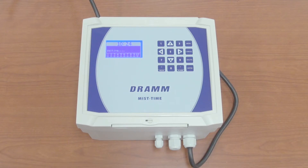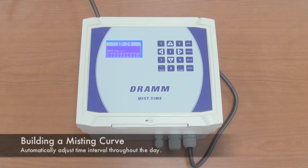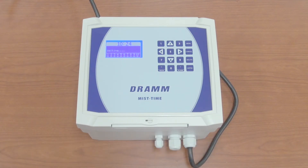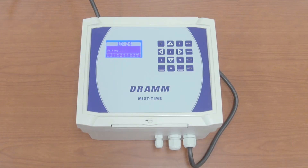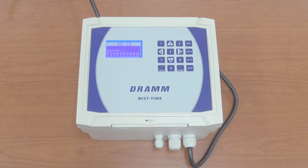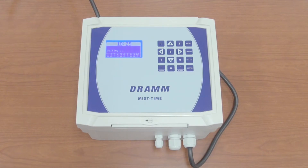An advanced feature of the mist time is the ability to use multiple time buckets throughout a day — up to six. This allows us to build a misting curve. For example, we could run from midnight until 8 a.m. at a wide interval just to get moisture on the plants; from 8 a.m. to 10 a.m. at a 30-minute interval; from 10 a.m. to 2 p.m. every five minutes due to high light intensity; from 2 p.m. to 5 p.m. back to 30 minutes; and from 5 p.m. to 11:59 on an hour and a half basis for overnight moisture.